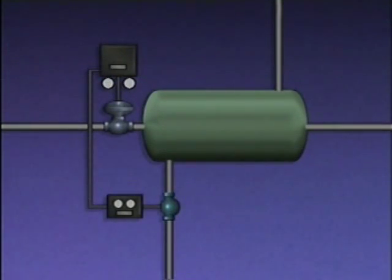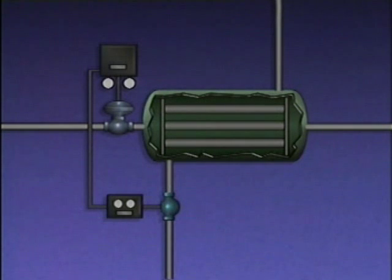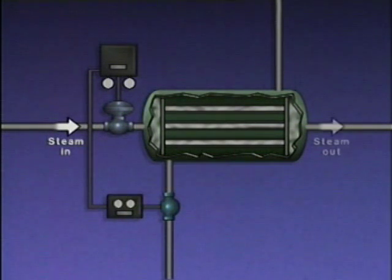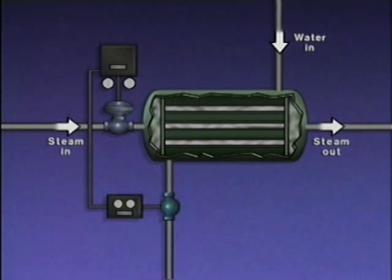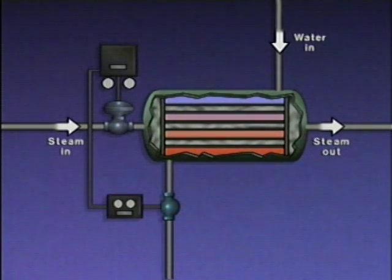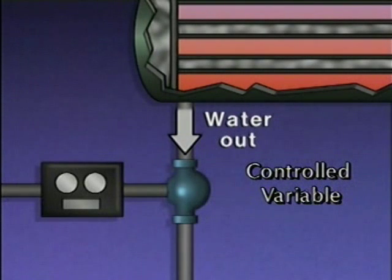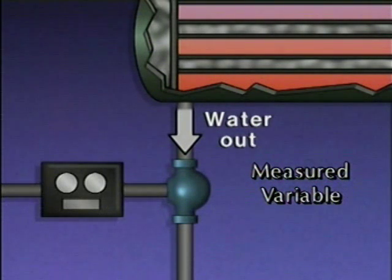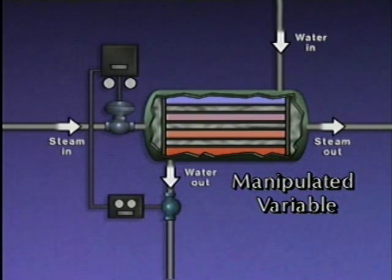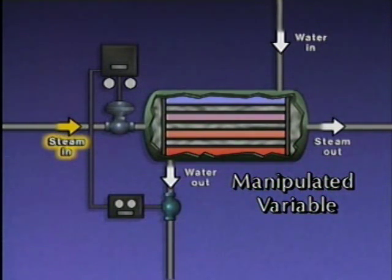To see how an automatic feedback control system works, we'll use this illustration of a heat exchange process. In this system, steam is used to heat water. The steam enters the system through a valve, then flows through tubes inside the heater and exits through a pipe on the other side. The steam transfers heat to the water, which enters the heater at the top, flows around the tubes, and exits the heater at the bottom. The temperature of the water at the outlet of the heater is the controlled variable for the system. It's also the measured variable, because the control system uses it as a basis for making operating changes. The manipulated variable in this system is the inlet steam flow, which is adjusted to keep the outlet water temperature at set point.